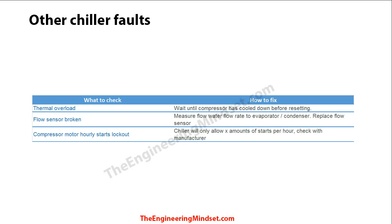This is not a complete list — there are hundreds of things that could go wrong with a chiller — but these are the more common issues. The easiest first step is always to check the error code and look it up with the manufacturer. Make sure you're authorized and competent to work on these chillers, as they are expensive and dangerous. Where possible, get a service engineer from the manufacturer to carry out servicing. Thanks for watching — please like, subscribe, and share, and check out TheEngineeringMindset.com.